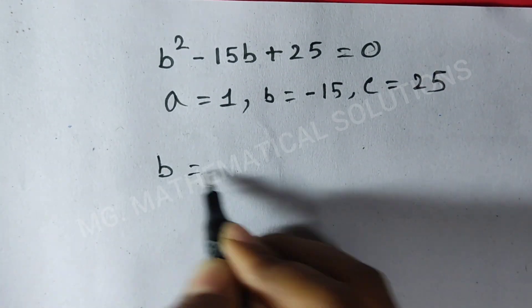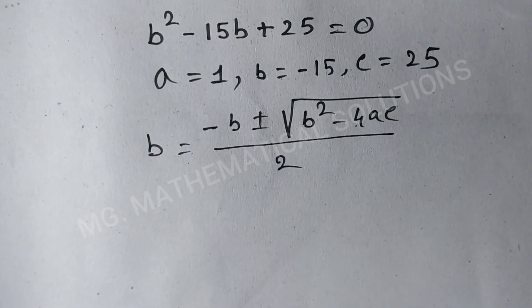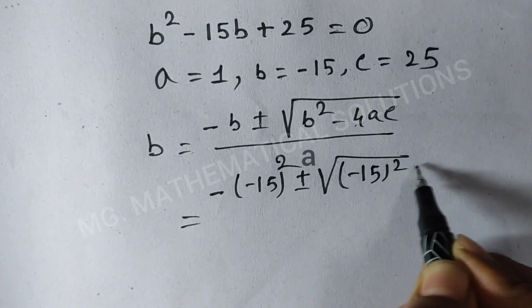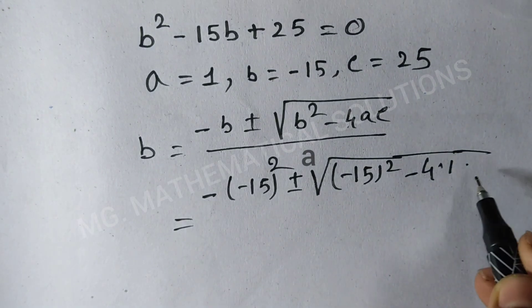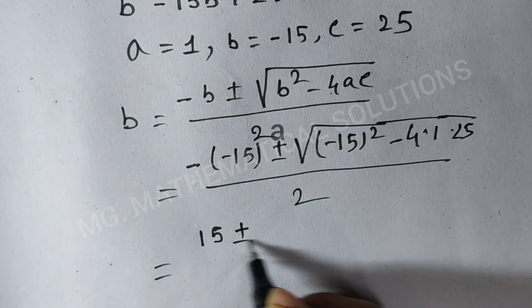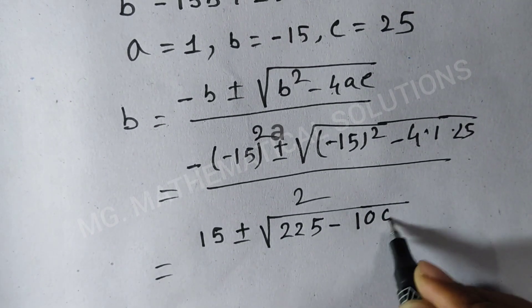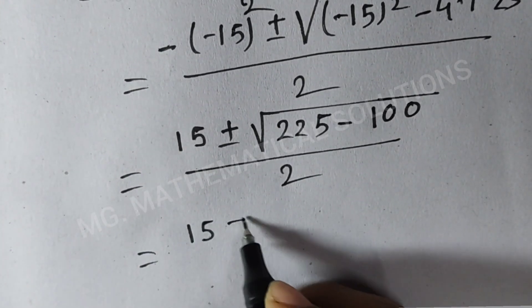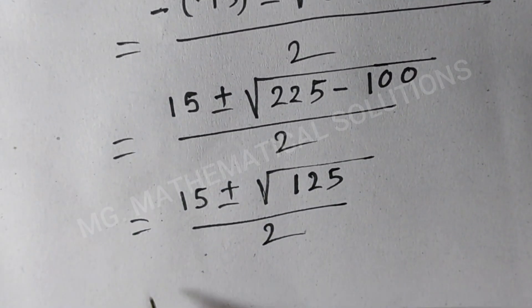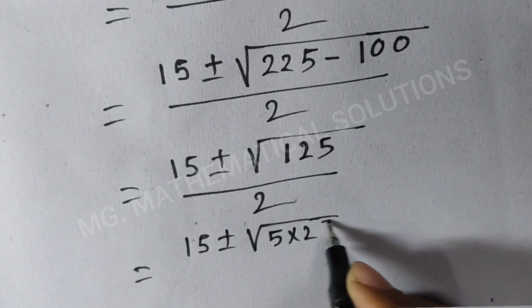Sridharacharya formula: b equal to minus b plus or minus root under b squared minus 4ac, all divided by 2. Substituting: minus (minus 15) plus or minus root under (minus 15) squared minus 4 times 1 times 25, divided by 2. This gives 15 plus or minus root under 225 minus 100, divided by 2, equal to 15 plus or minus root under 125, divided by 2.